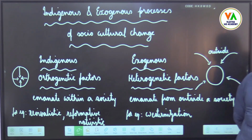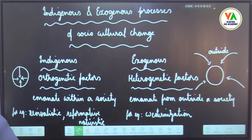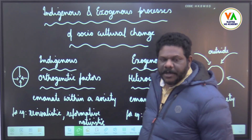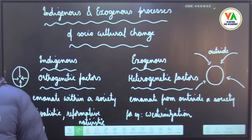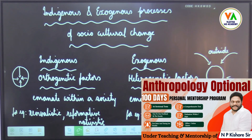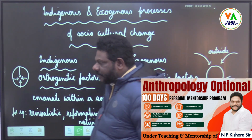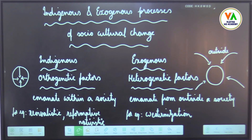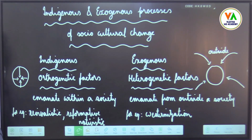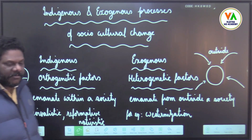For example, revivalistic, reformative, and nativistic movements. On the other hand, you have exogenous processes due to heterogenetic factors which emanate from outside a society — for example, westernization. Culture is mentally held ideas and concepts, and society exhibits some observable forms of behavior.